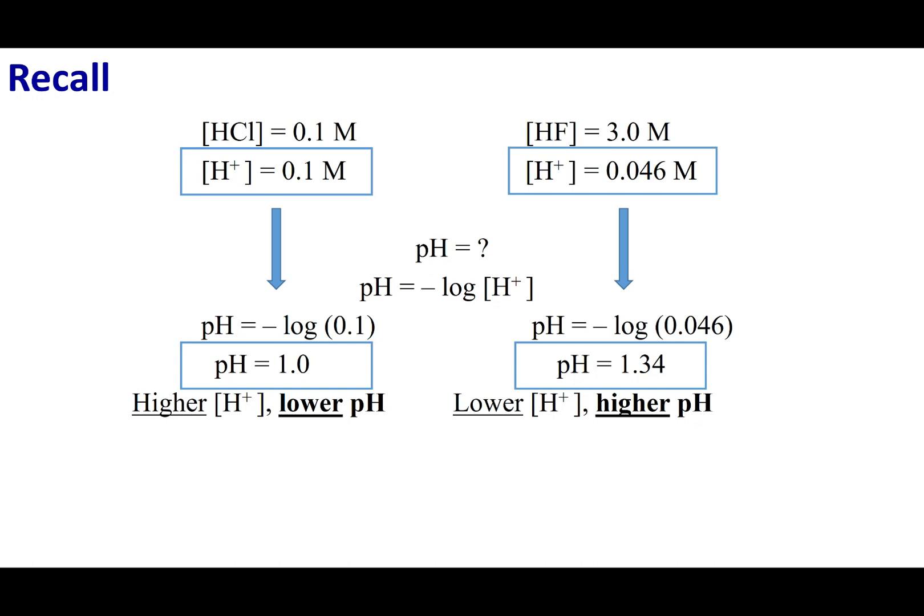Remember that relationship. A basic solution doesn't have a lot of H+ ions, that's why the pH is really high. In an acidic solution, there is a lot of H+ ions, and that's why the pH is fairly low. I hope that made sense. Remember to stay safe, Chem 1B.